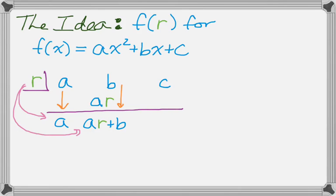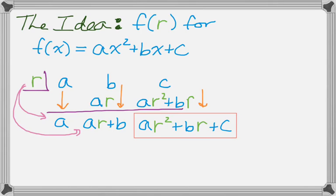And I'm going to add down. So that gives me ar + b. Now I'm going to multiply that by r to give me ar² + br. And then add down. And I end up with ar² + br + c. And if you look at the original function, that's exactly what I would have gotten if I had plugged in r from the very beginning. So that's kind of how it works.